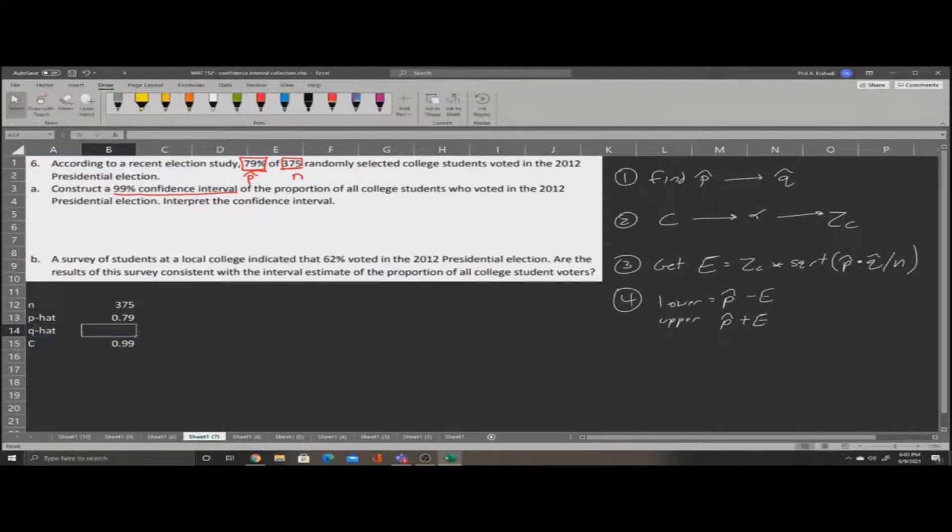Now, for q-hat, we're going to take 1 minus p-hat. So we'll enter equals, 1, subtract, and click on the p-hat. This will calculate our q-hat for us.